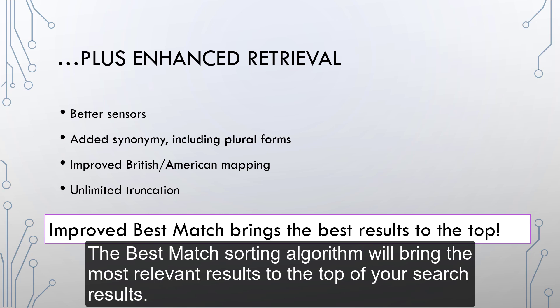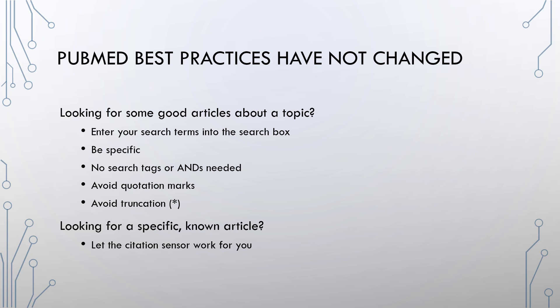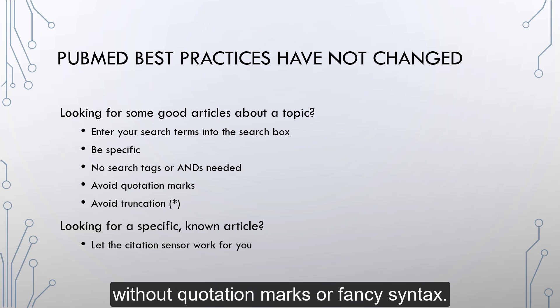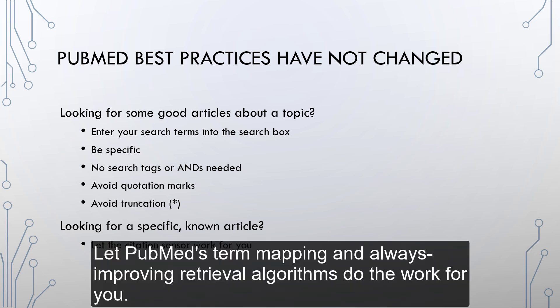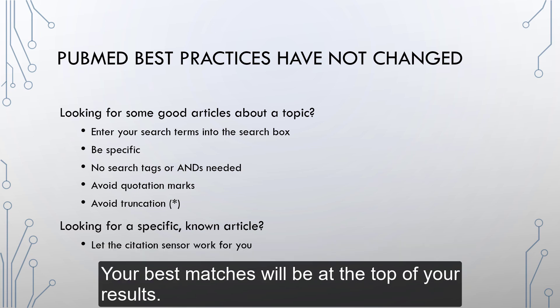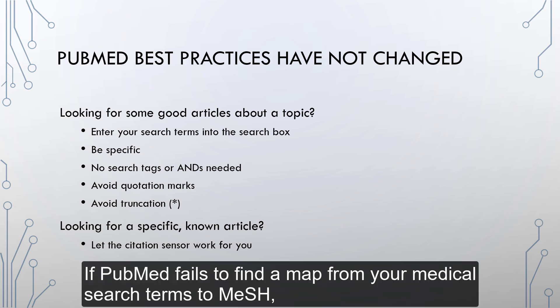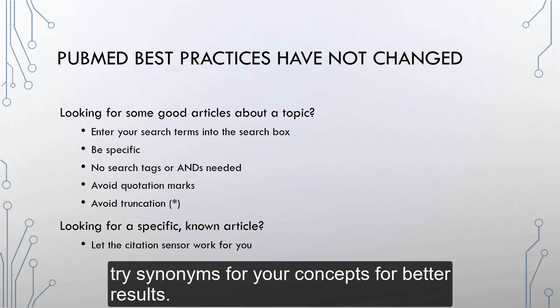The best match sorting algorithm will bring the most relevant results to the top of your search results. To find articles by topic, enter your words or phrases into the search box without quotation marks or fancy syntax. Let PubMed's term mapping and always improving retrieval algorithms do the work for you. Your best matches will be at the top of your results. You can check the term mapping by viewing your search details from the advanced screen. If PubMed fails to find a map from your medical search terms to MeSH, try synonyms for your concepts for better results.